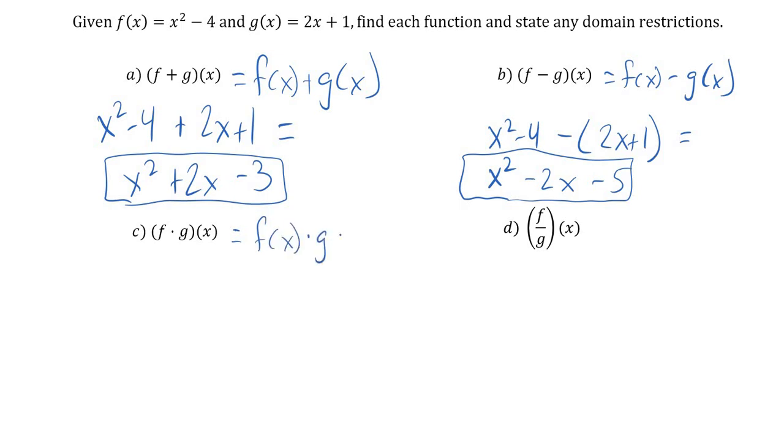This means multiplication. So f of x times g of x. So if I write these out, x squared minus 4 times 2x plus 1, well you're just going to distribute. x squared times 2x, x squared times 1, negative 4 times 2x, negative 4 times 1, combined like terms.